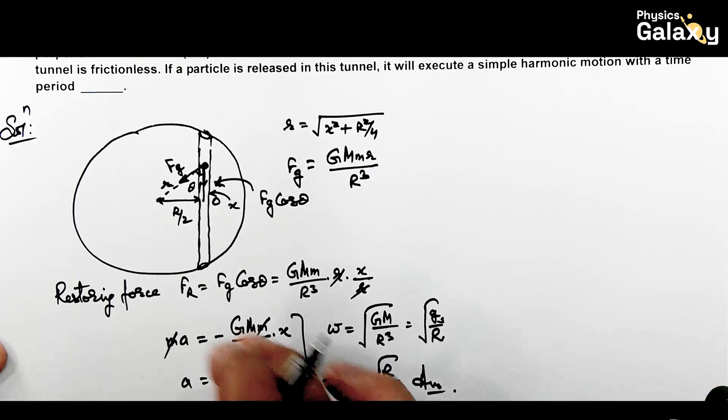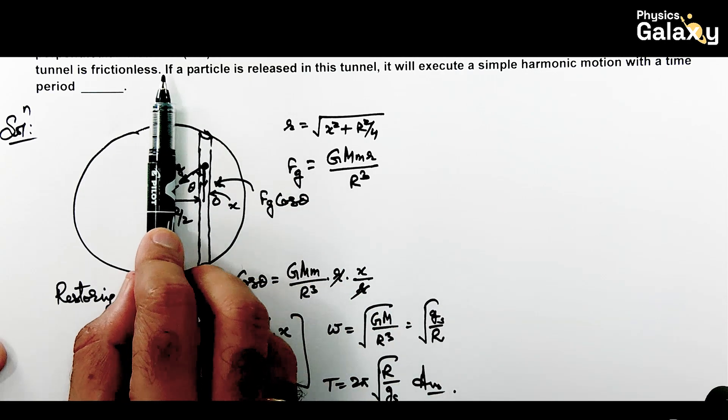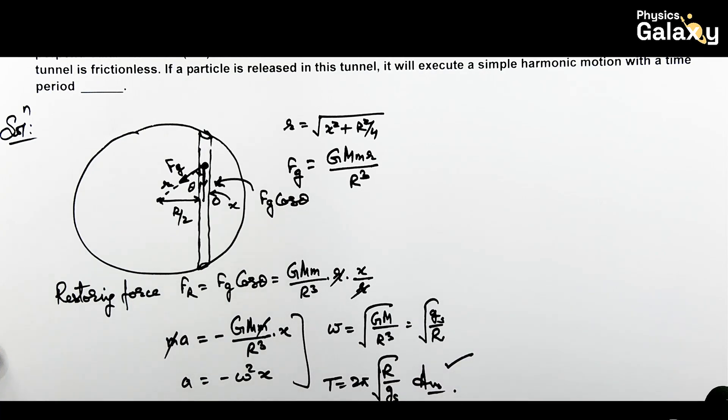Keep in mind what we covered theoretically in the concept video: the time period of oscillation in a tunnel is the same regardless of where the tunnel is built—whether along a diameter or along any chord—it's always given by the same value.